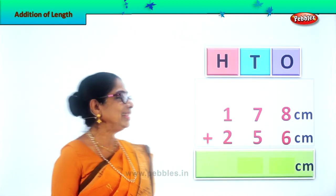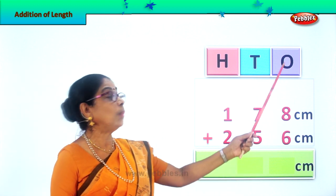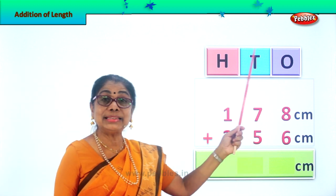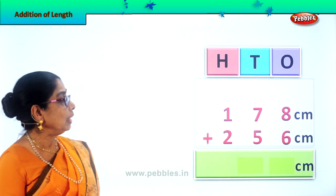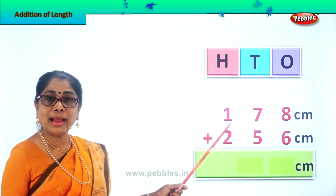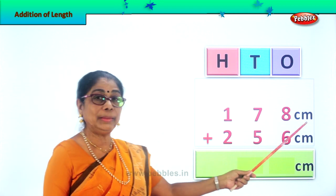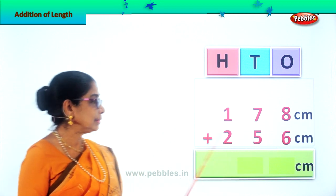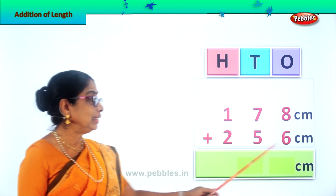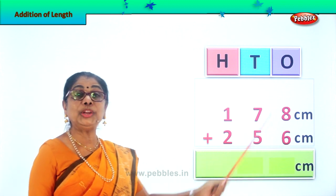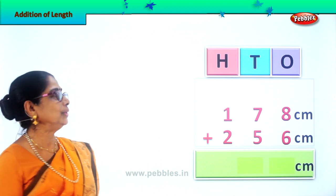Here we are. The numbers are placed in 1's, 10's, 100's order. We have 178 cm plus 256 cm. So we need to add these two.